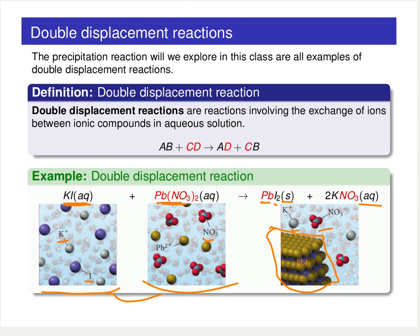This is an example of both a double displacement reaction and a precipitation reaction, because we've swapped partners — the potassium and the nitrate, the iodine and the lead are now paired up — and you are forming a solid compound as a product.